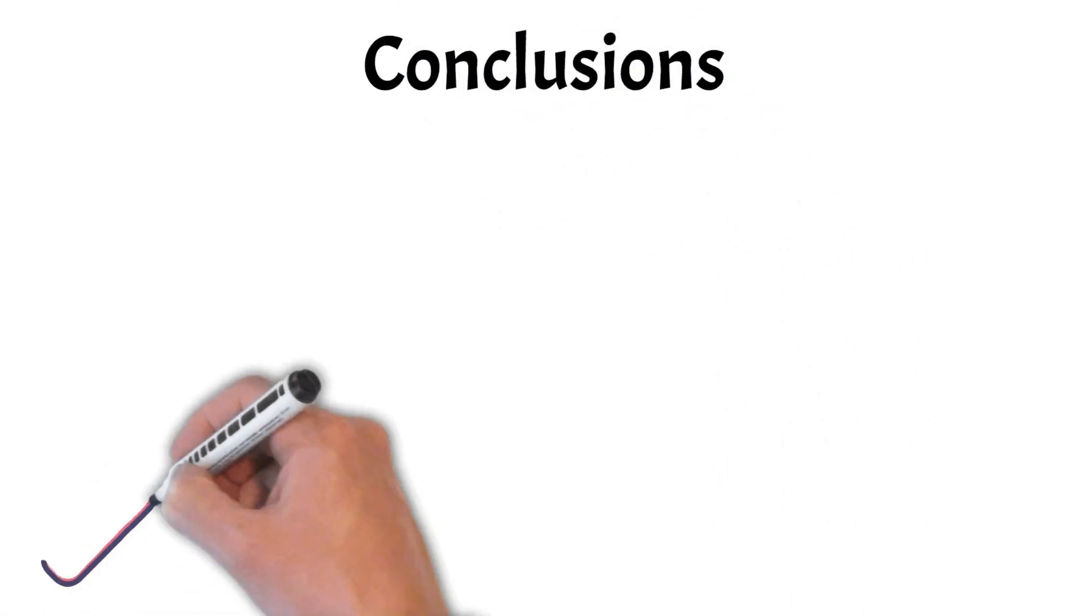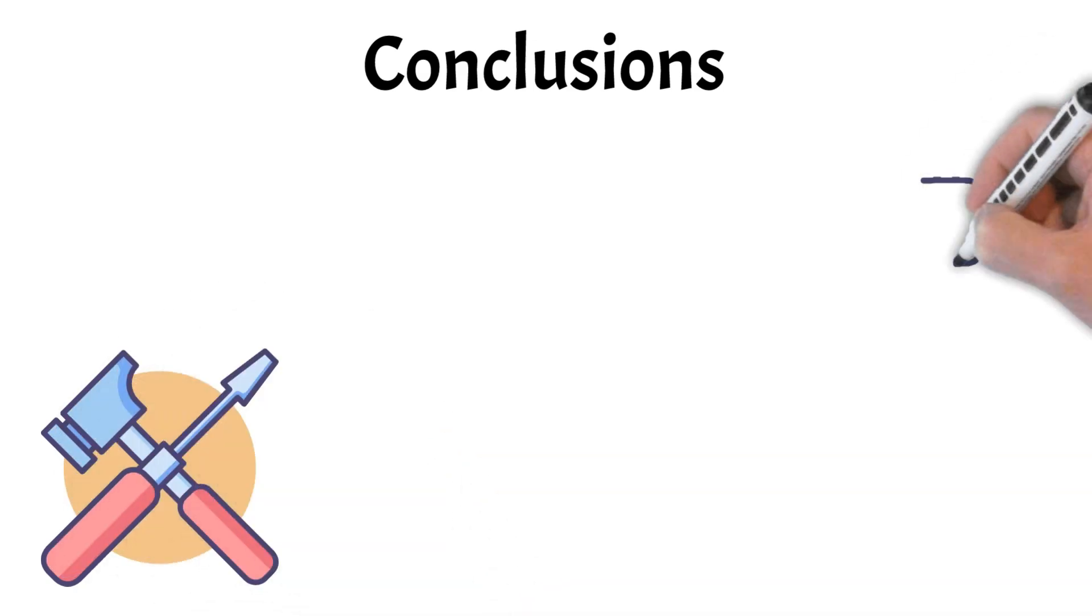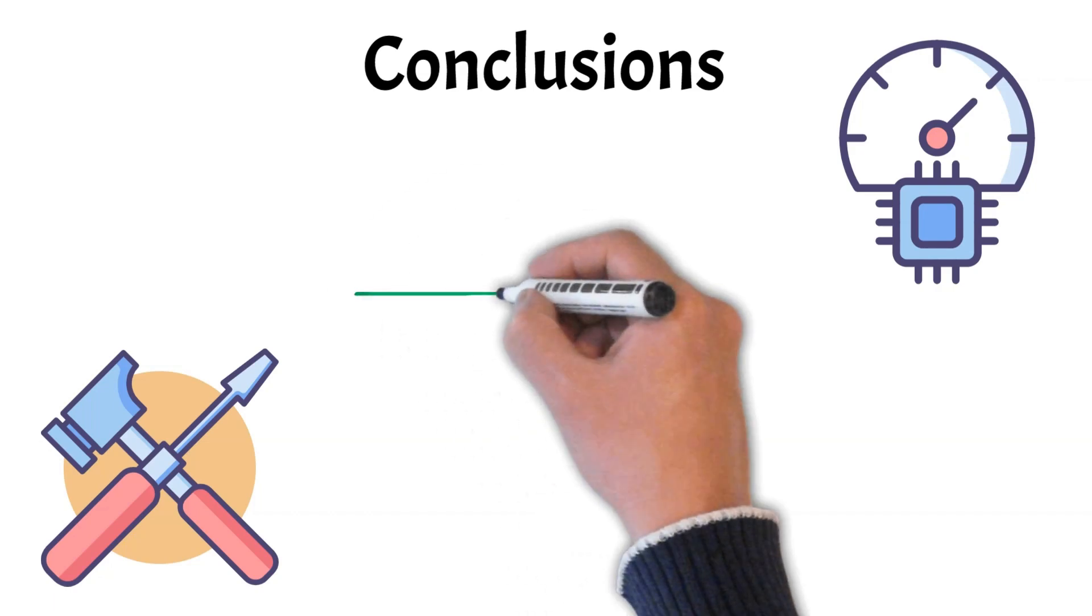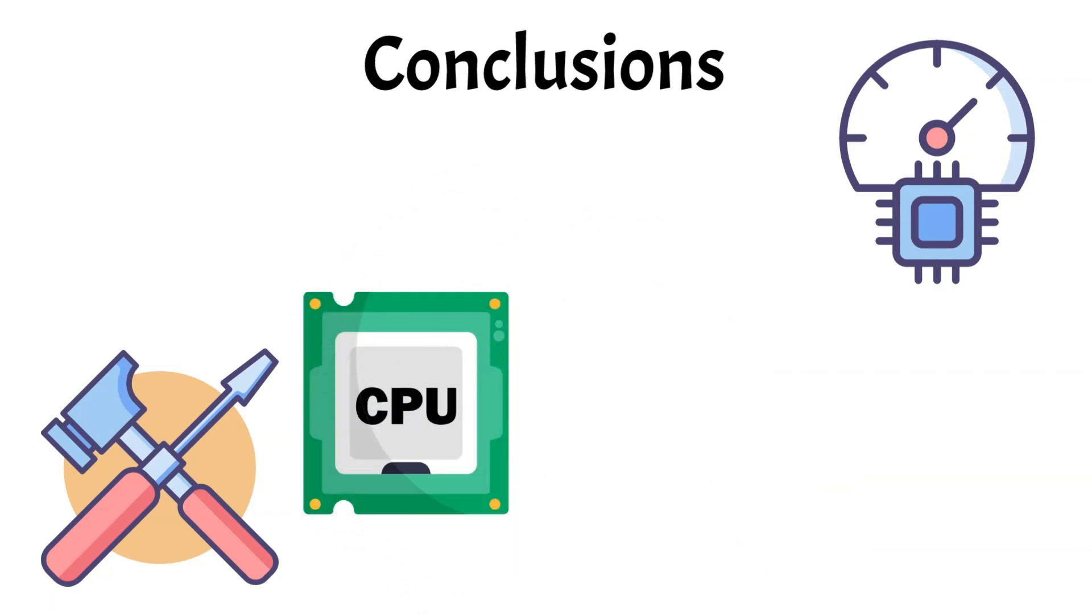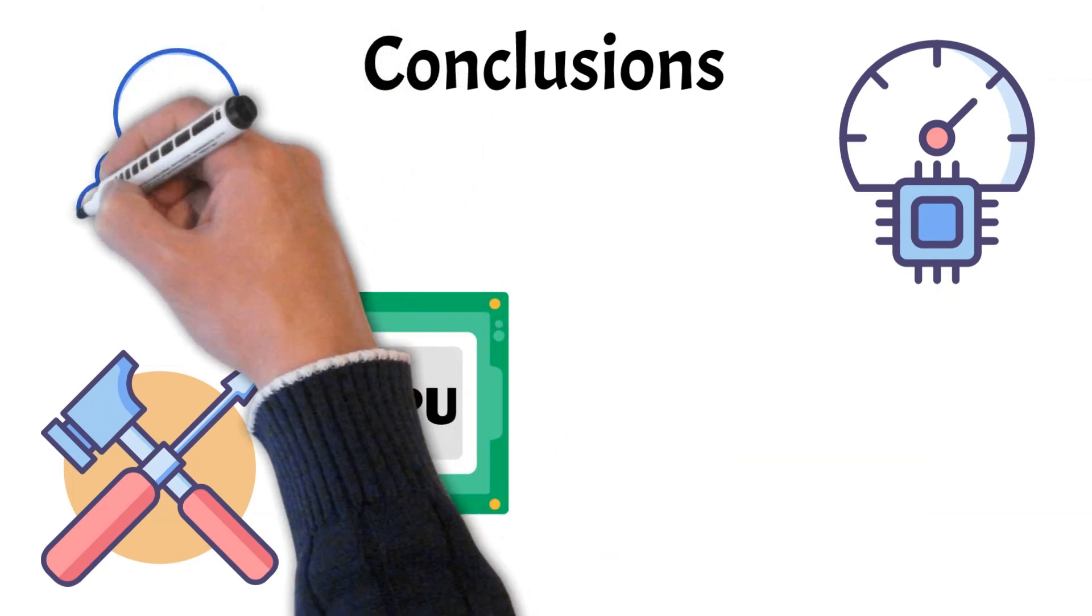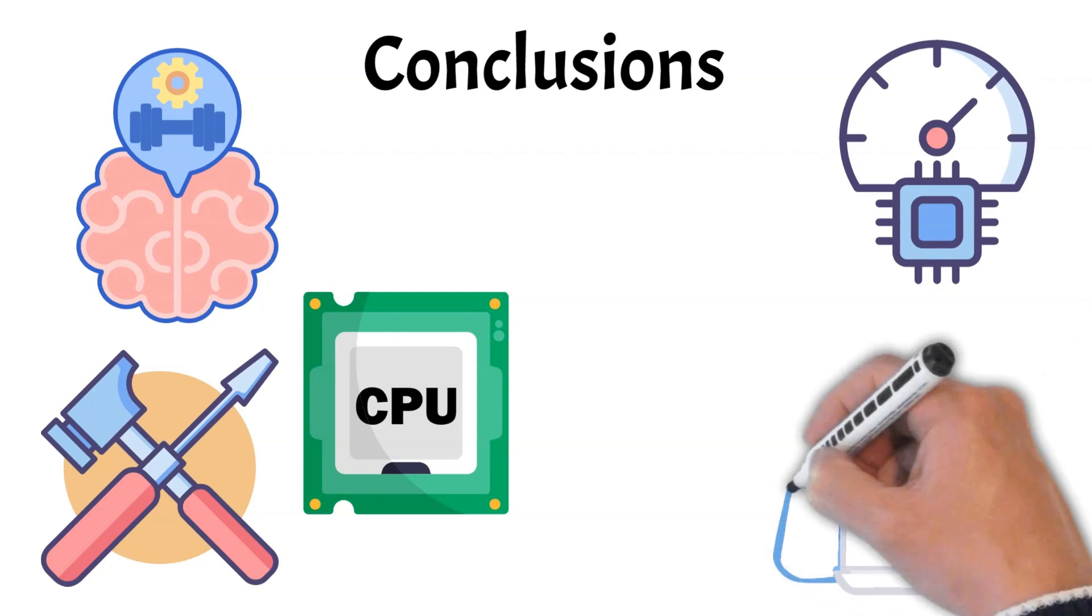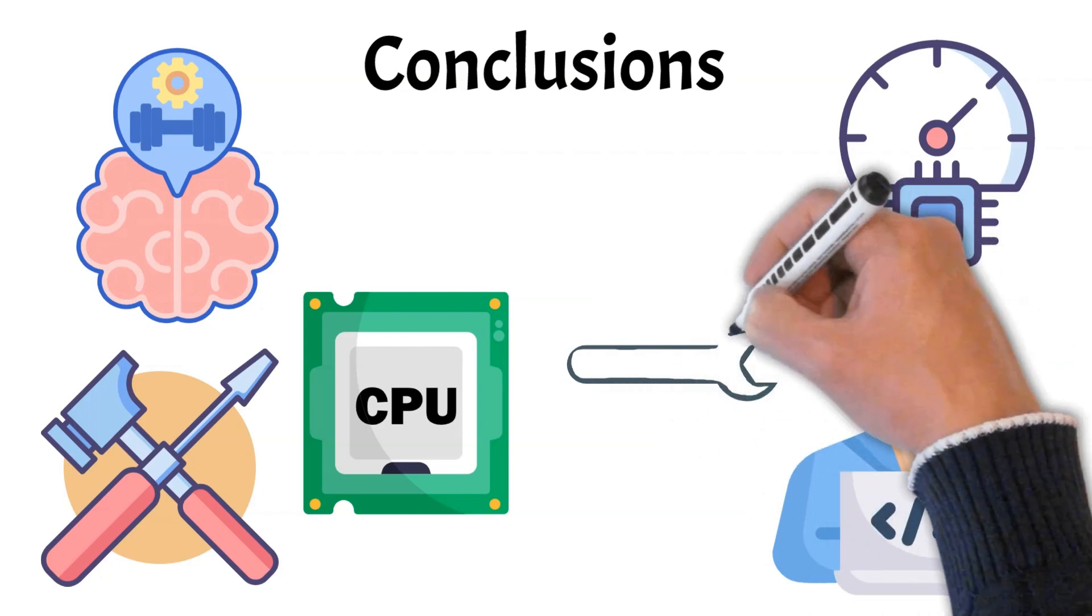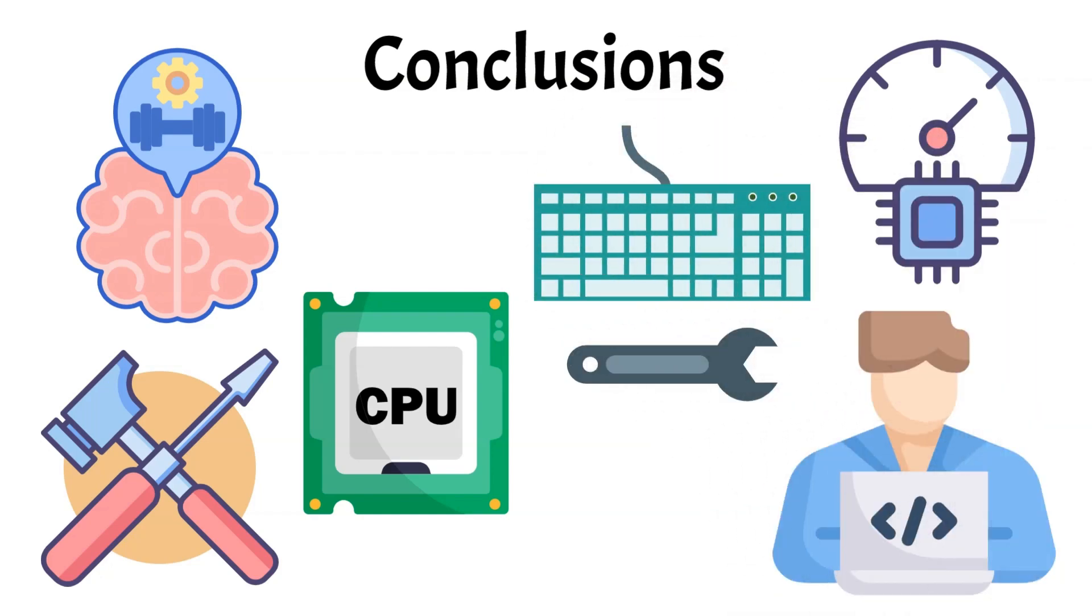In conclusion, assembly language serves as a crucial tool for programmers who need precise control over hardware and require optimal performance in their applications. While it offers significant advantages, such as speed and direct interaction with the CPU, it also presents challenges like complexity, lack of portability, and reduced flexibility for large-scale software development. Understanding these aspects helps developers make informed decisions about when and how to utilize assembly, ensuring they leverage its strengths while being mindful of its limitations.